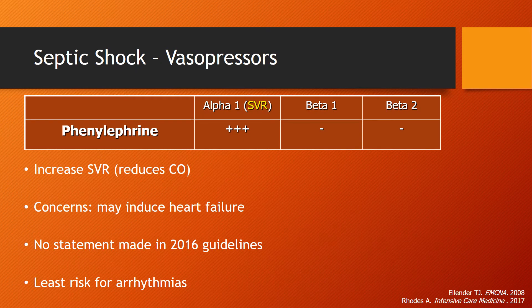Phenylephrine can also be used in septic shock. As a pure alpha-1 agonist, it increases systemic vascular resistance, but a reflex response will cause a decrease in heart rate and reduction in cardiac output — raising concern that it may induce heart failure. The 2012 Surviving Sepsis Campaign mentioned phenylephrine use in septic shock patients with tachyarrhythmia, where the reduction in cardiac output may be beneficial, though it is not mentioned in the 2016 guideline. Phenylephrine does have a lower risk of causing arrhythmias compared to other vasopressor agents.